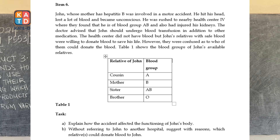From the table, the cousin is blood group A, the mother is blood group B, the sister is blood group AB, and the brother is blood group O. The tasks ask: part A — explain how the accident affected the functioning of John's body; and part B — without referring John to another hospital, suggest with reasons which relative or relatives could donate blood to John.